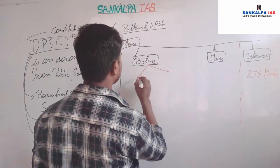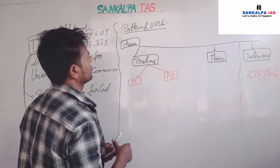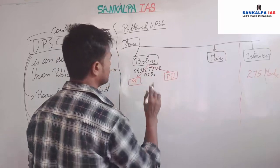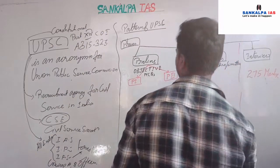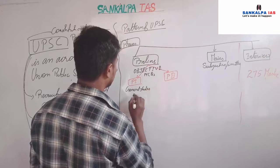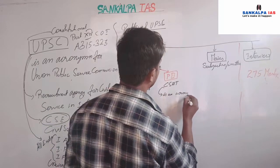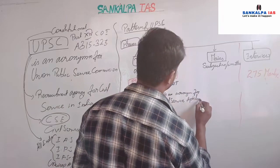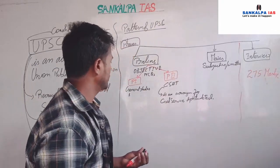In Prelims there are two papers. Prelims consists of objective type questions in MCQ form. Mains is subjective or written. In Paper 1 there is General Studies. Paper 2 is known as CSAT, which is an acronym for Civil Service Aptitude Test.